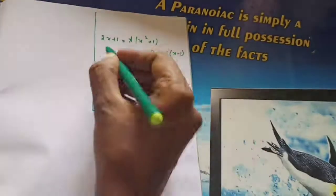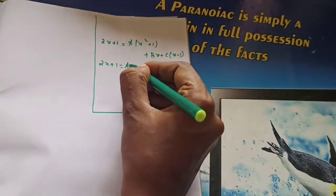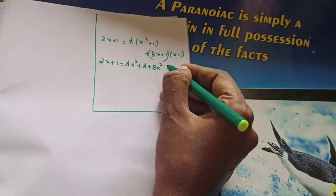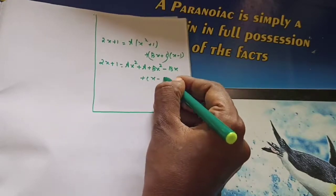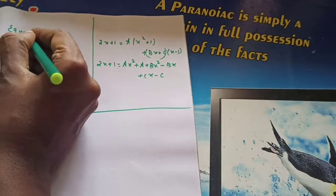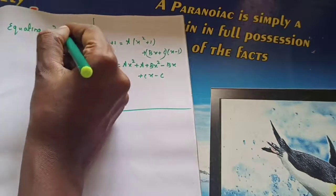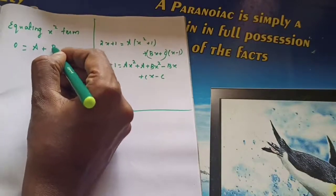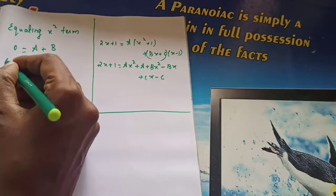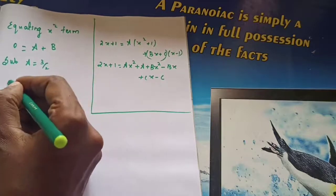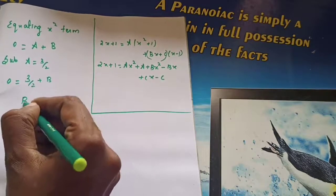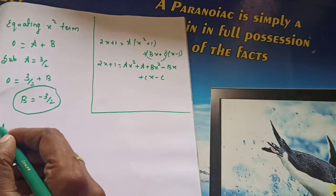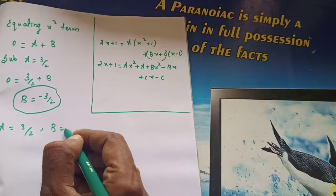Expanding the right side: 2x plus 1 equals ax squared plus a plus bx squared minus bx plus cx minus c. Now equate the x squared term. On the left side the x squared coefficient is 0, on the right side it is a plus b. Substituting A equals 3 by 2: 3 by 2 plus b equals 0, so b equals minus 3 by 2.